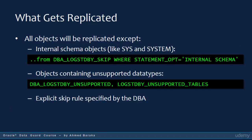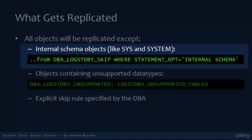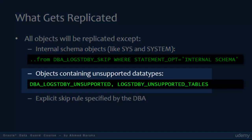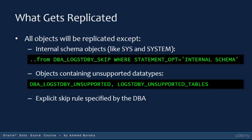When you have a logical standby database configured, all objects in the primary database will be replicated except the following: any object owned by internal schemas like SYS and SYSTEM — to retrieve a list of internal schemas, select from the DBA_LOGSTDBY_SKIP view; any object containing an unsupported data type will be skipped — to obtain a list of those objects, query DBA_LOGSTDBY_UNSUPPORTED or LOGSTDBY_UNSUPPORTED_TABLES. You also have the option to define a skip rule, which explicitly tells Data Guard to skip replicating specific objects.